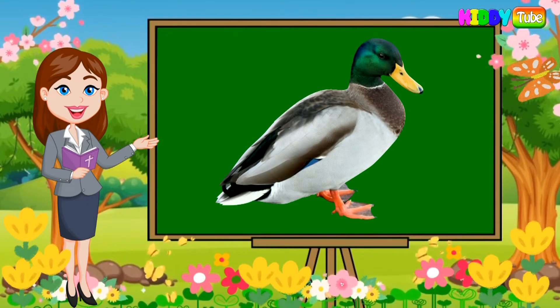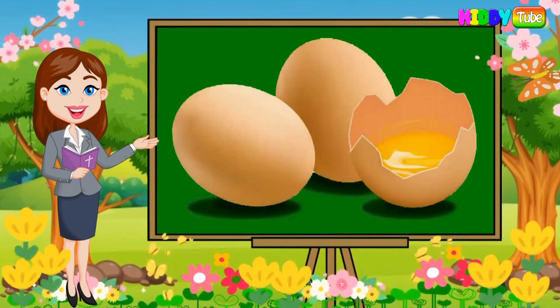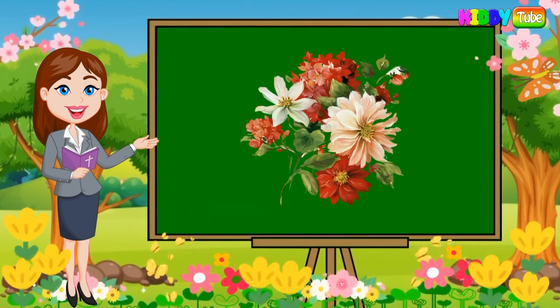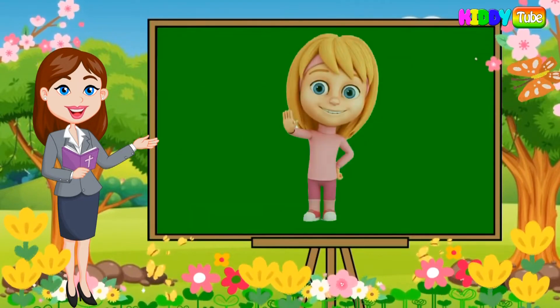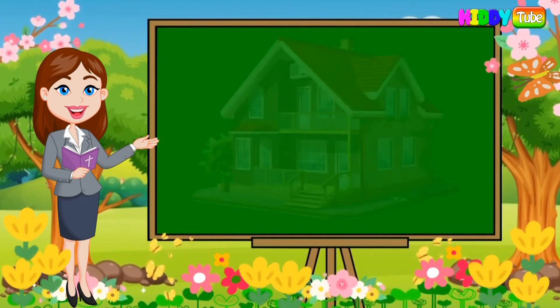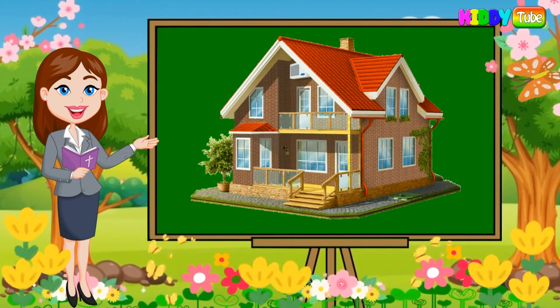D is for duck, E is for egg, F is for flowers, G is for girl, H is for house.